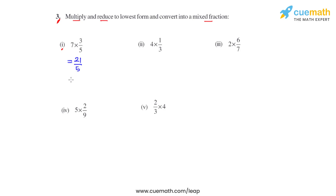This is already in the lowest form. To convert this into a mixed fraction we have to divide 21 by 5. When we divide 21 by 5 we get the quotient as 4 and the remainder as 1. So the mixed fraction will be 4 and 1 fifth.